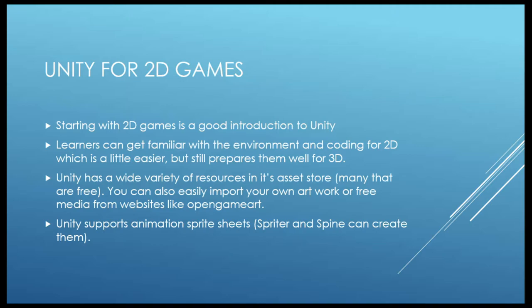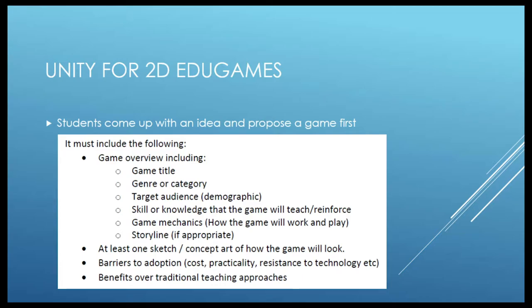Unity has its own Asset Store with a lot of free and paid resources. There's also Open Game Art, which has been around for years — everything there is free, including sprite sheets, graphics, sounds, and 3D models. Unity supports animation and sprite sheets. When starting with 2D, I get my students to come up with a proposal covering genre, target audience, game mechanics, storyline, and other details, before they start making their games.